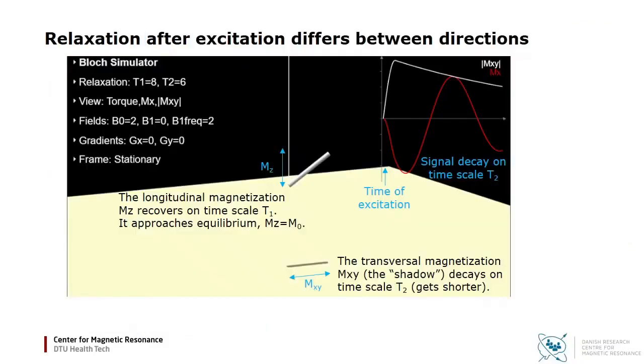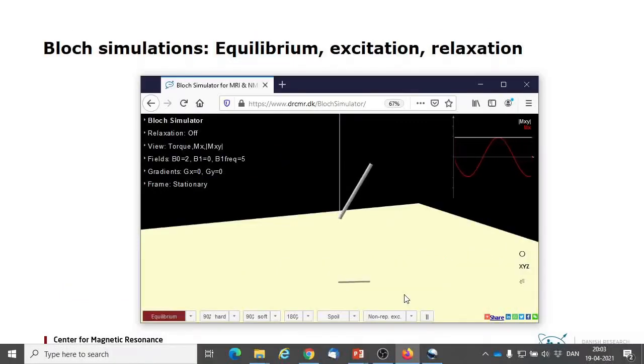In the demonstrations, you will see the dynamics described by the Bloch equations for fields that are manipulated interactively, including the polarizing field B0 and the RF field B1. You see here a magnetization vector precessing in a magnetic field. It has a longitudinal component along the direction of the B0 field, that is here vertical, and a transversal component in the orthogonal plane, here illustrated by the shadow on the floor.